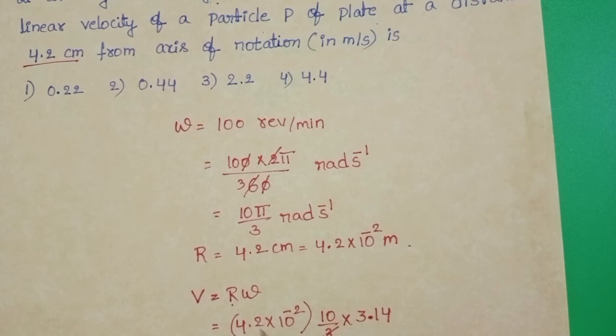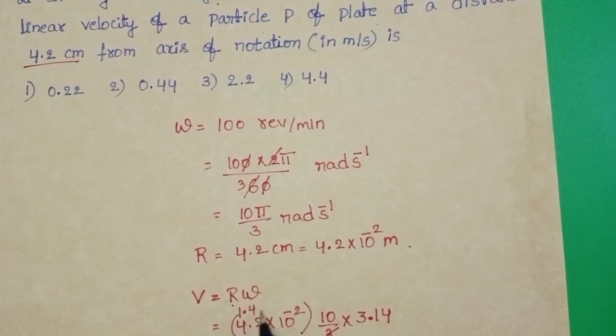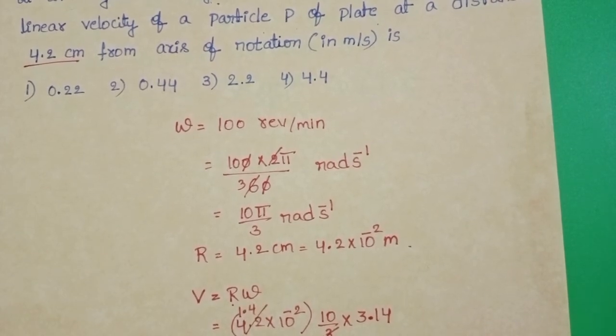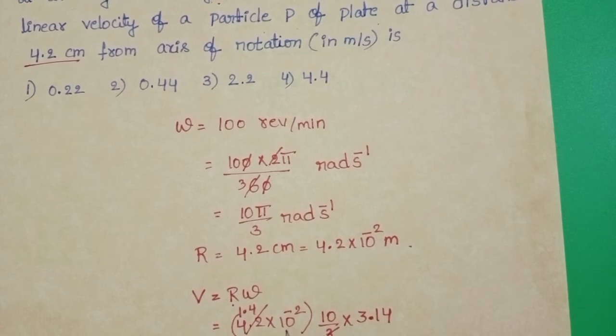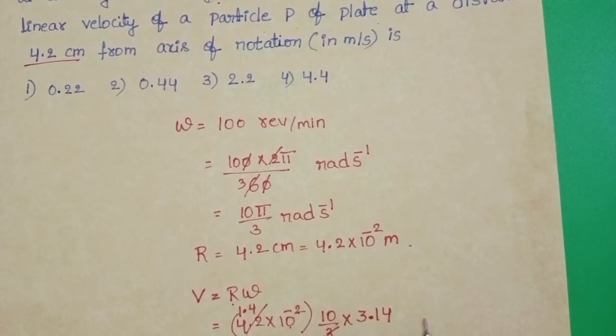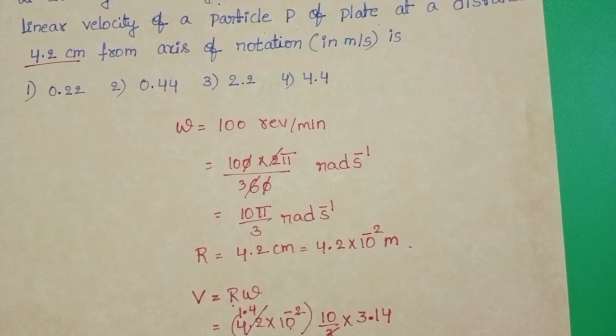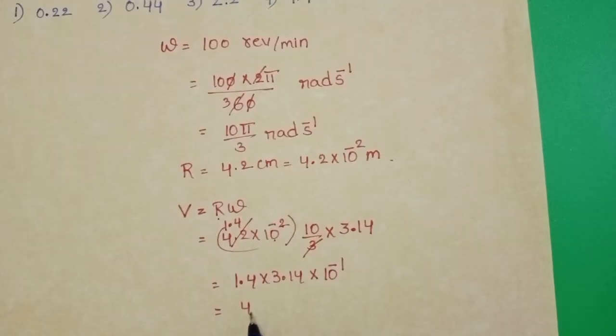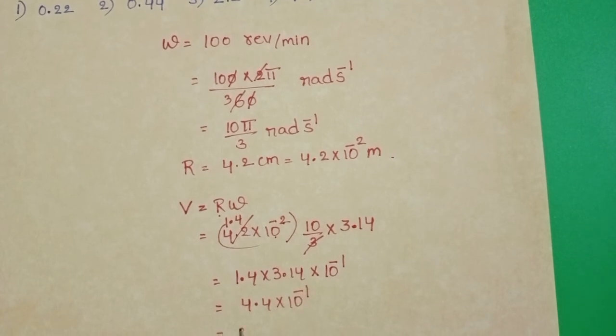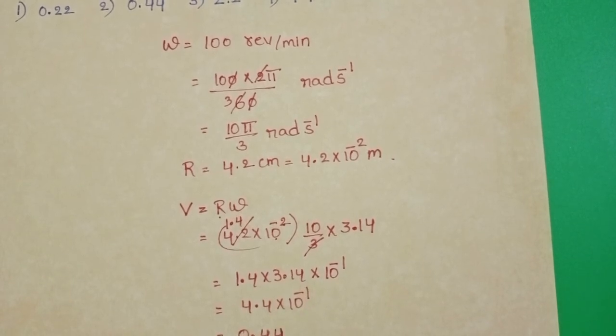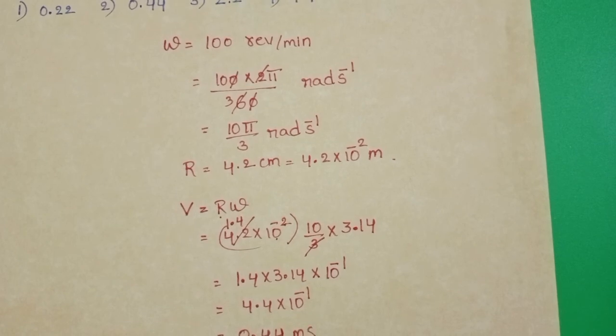Cancel with 3. 3 ones, 3 fours. 1.4 into 3.14 into 10 power minus 2 into 10 power plus 1, 10 power minus 1. 4.4 into 10 power minus 1. 0.44 meter per second.